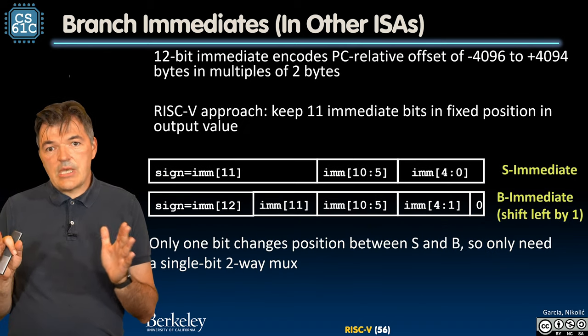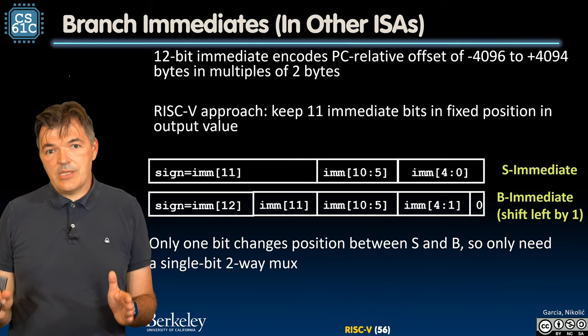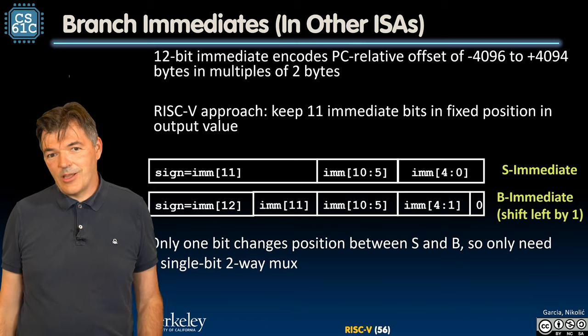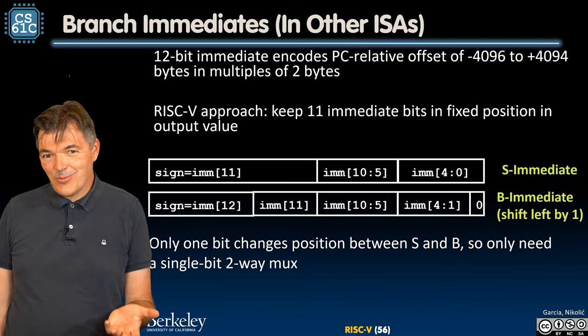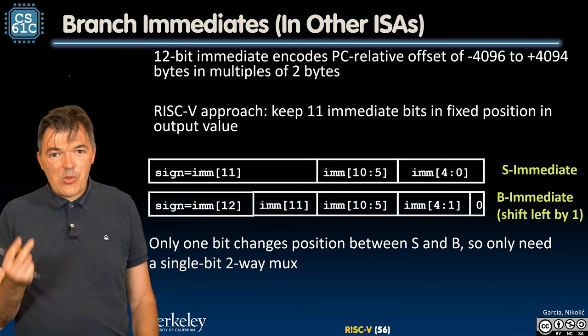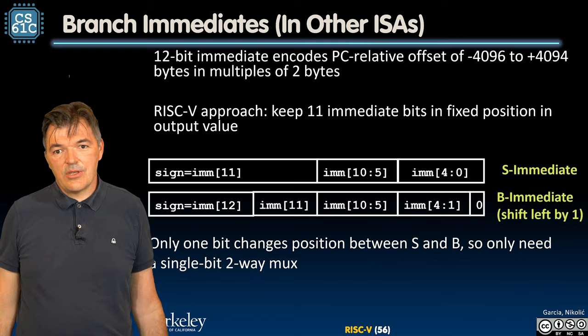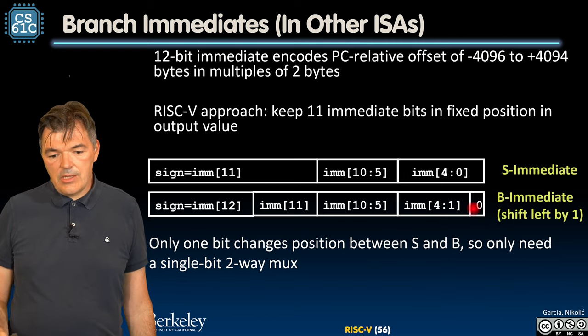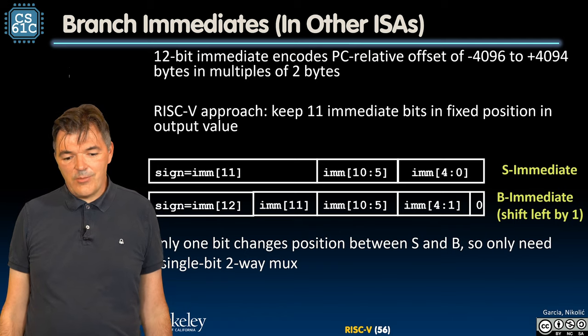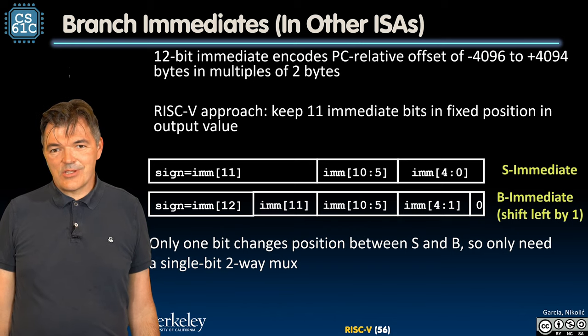RISC-V does it a little bit differently. It keeps most of the immediate values, 11 out of 12 immediate values, in the same place as what we have had in the S format. It just moves one immediate value. That's the rationale for why we have that kind of encoding that looked a little bit strange early on. But as a result now, we just need one multiplexer with two inputs to move that bit to the right position between the two formats. So S immediate and B immediate are very similar to each other, all we need to do is to place the 11th immediate in the right spot. Please just take a look at that and convince yourself that this is true.